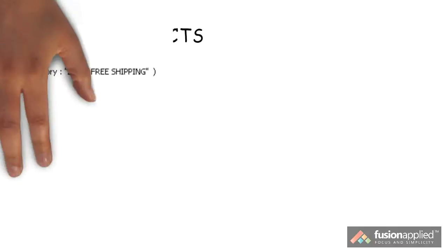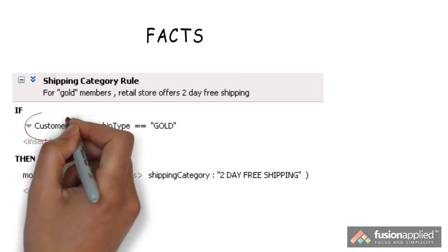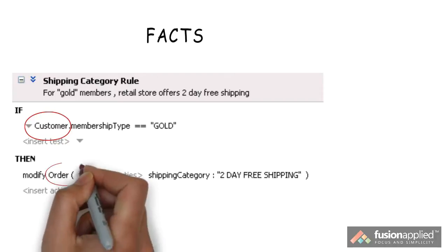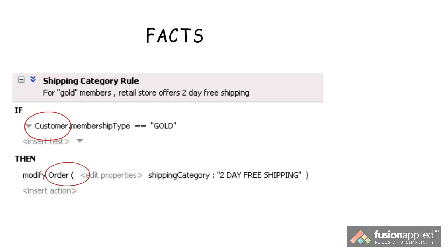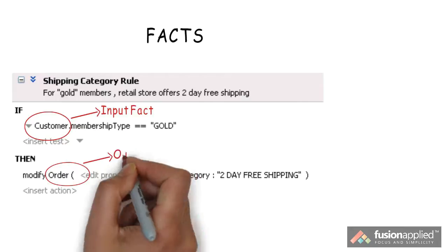Let's look at some of the terminology used with Oracle business rules, starting with facts. For a shipping business rule example: if customer membership type is gold, then we offer two-day free shipping. The input that this rule takes is a customer object, because it's checking the customer membership type, and it returns an order object type with two-day free shipping. Here, the customer is called an input fact and the order is called an output fact.